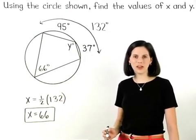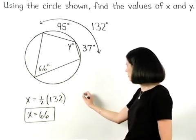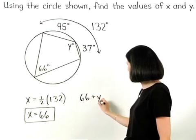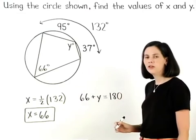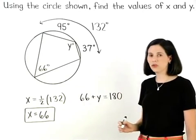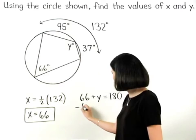So we can set up the equation 66 plus y equals 180. Solving from here, we subtract 66 from both sides.